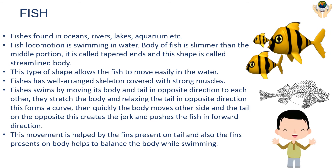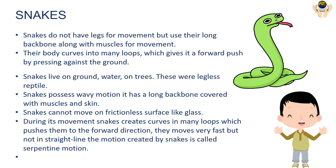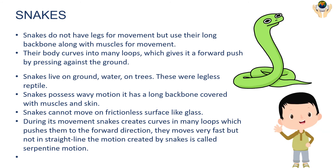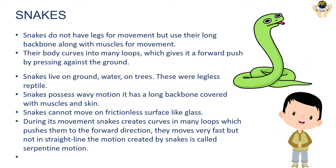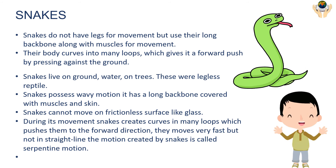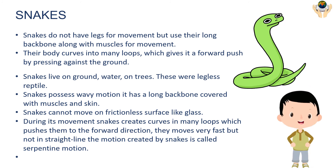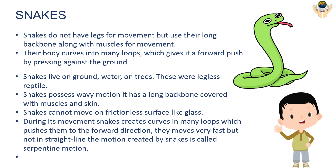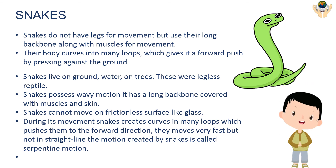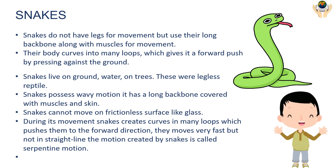Snakes: snakes do not have legs for movement but use their long backbone along with muscles. Their body curves into many loops, which gives forward force by pressing against the ground. Snakes live on the ground, in water, and in trees, and are legless reptiles possessing wavy motion. A snake has a long backbone covered with muscle and skin. Snakes cannot move on a frictionless surface like glass. During movement, snakes create curves in many loops which push them forward. They move very fast but not in a straight line. The motion created by snakes is called serpentine motion.